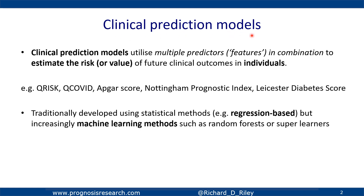What do we mean by a clinical prediction model? A clinical prediction model means we are interested in predicting the risk or the particular value of a future clinical outcome relevant to individuals such as patients in healthcare. These models utilize multiple predictors, also known as features or prognostic factors — multiple variables such as age, body mass index, family histories, maybe some biomarkers — which are used in combination to give every individual their risk or predicted value of that future clinical outcome. Well-known examples are QRisk for predicting cardiovascular disease, QCOVID for predicting risk of mortality when admitted to hospital, the APGAR score in newborns, Nottingham prognostic index in breast cancer, and various diabetes scores. There are many models out there and indeed many people in their research career end up doing some sort of prediction modelling.